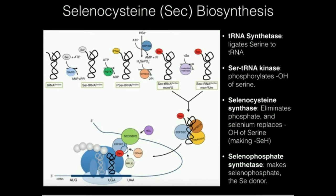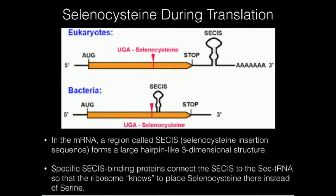Now you have a selenocysteine tRNA. The question is, if this is a serine tRNA, how is it that the mRNA and the ribosome know exactly where to put the selenocysteine? In other words, why doesn't this just get put in anywhere where a serine is supposed to go? Because that would cause a faulty protein. It turns out there's a mechanism we're going to look at on the next slide as to how a ribosome knows where to stick this tRNA instead of sticking in a normal serine. This tRNA with the selenocysteine has the ability to bind a bunch of binding proteins, and understanding that there are binding proteins there is really important for the function we're going to look at.